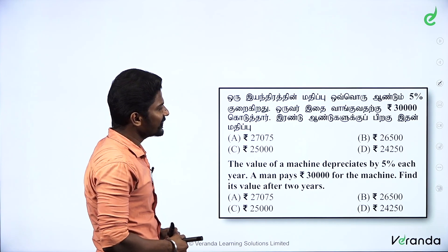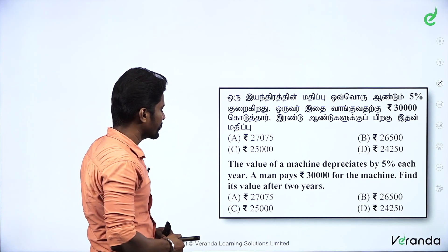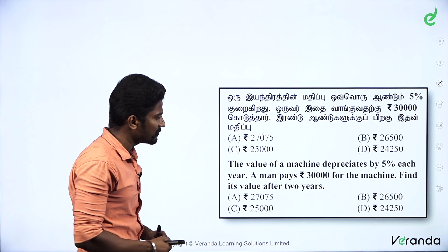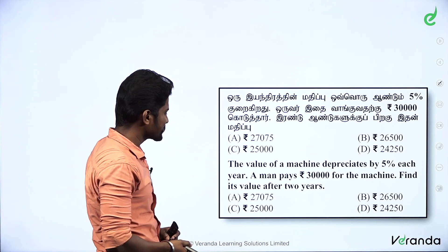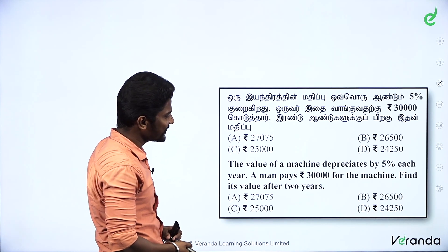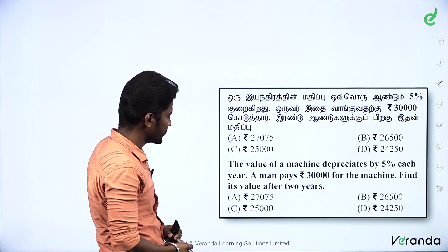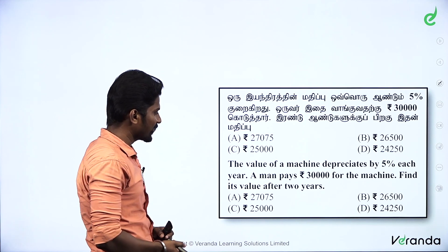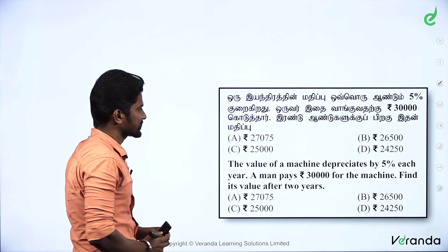The value of a machine depreciates by 5% each year. A man pays $30,000 for the machine. Find the value after 2 years.